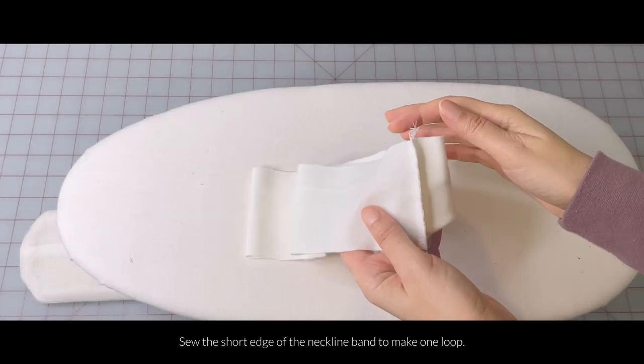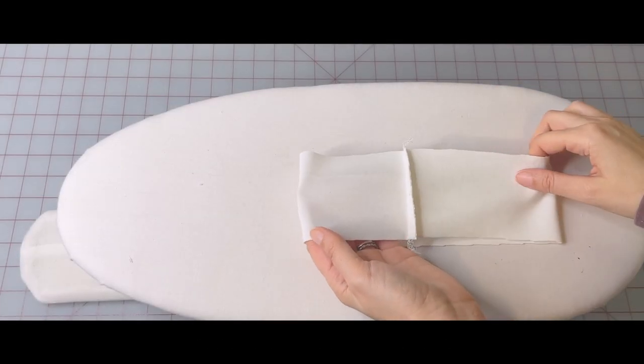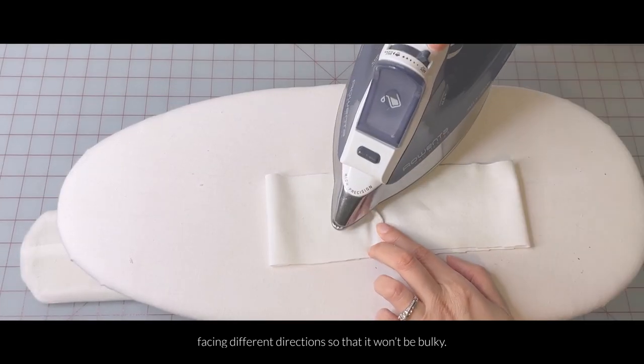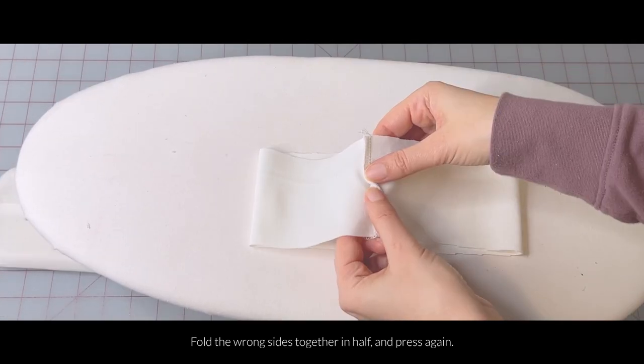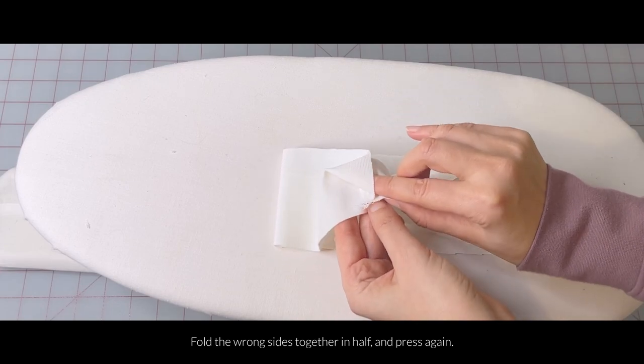Sew the short edge of the neckline band to make one loop. Then press the seam allowances facing different directions so it won't be bulky. Fold the wrong sides together in half and press again.